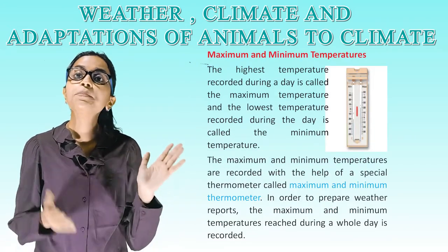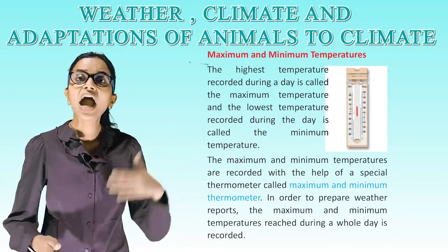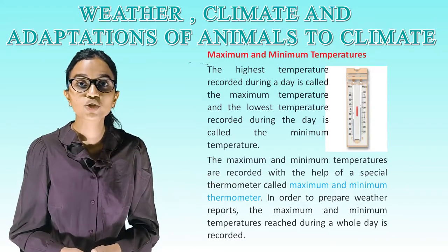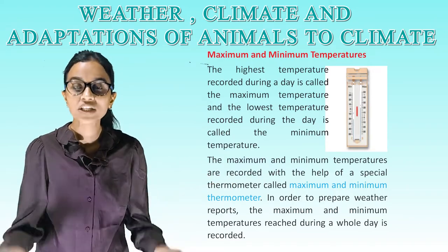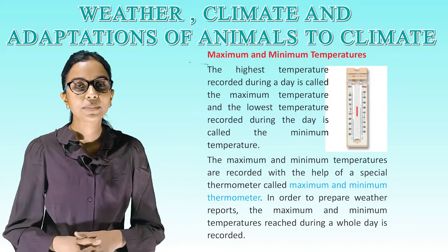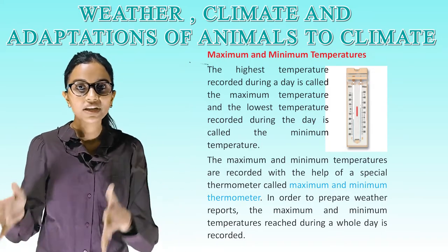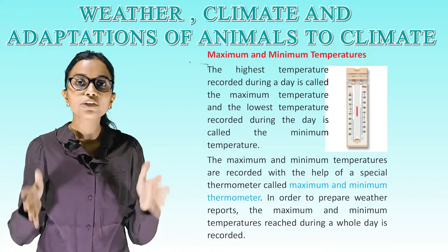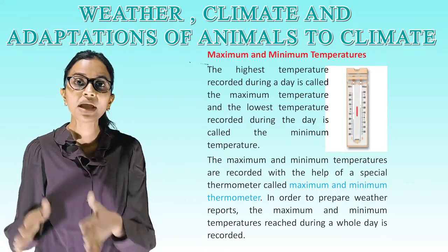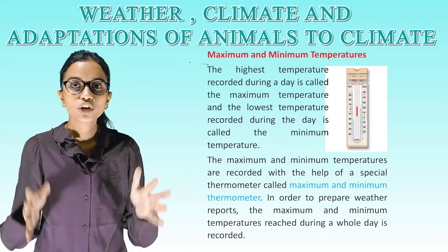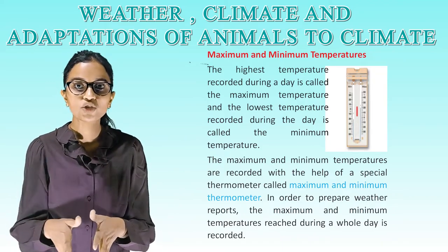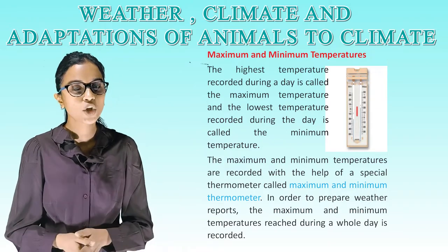Maximum and minimum temperatures: the highest temperature recorded during a day is called the maximum temperature, and the lowest temperature recorded during the day is called the minimum temperature. These are recorded with the help of a special thermometer called the maximum and minimum thermometer. In order to prepare a weather report, the maximum and minimum temperatures reached during a whole day are recorded.